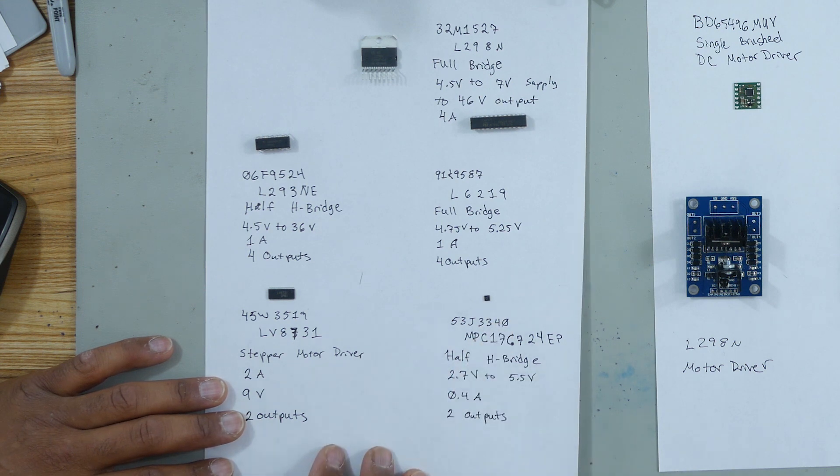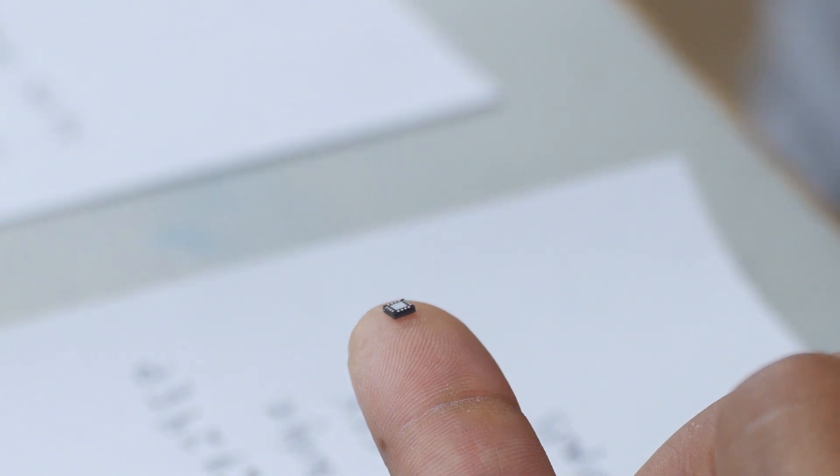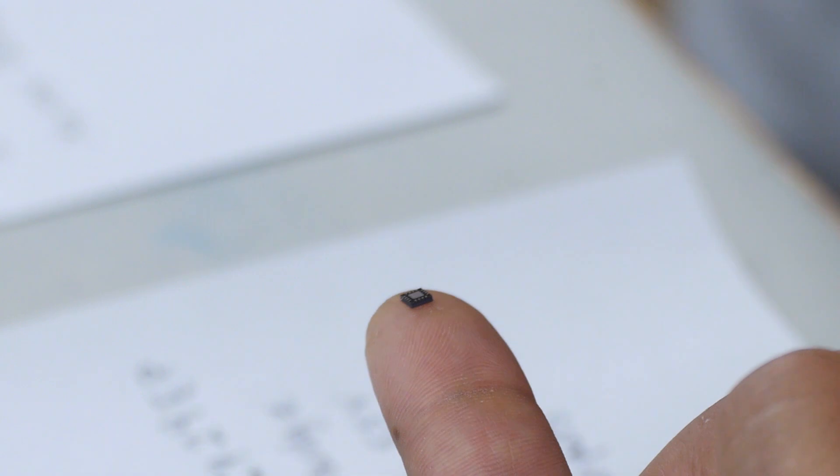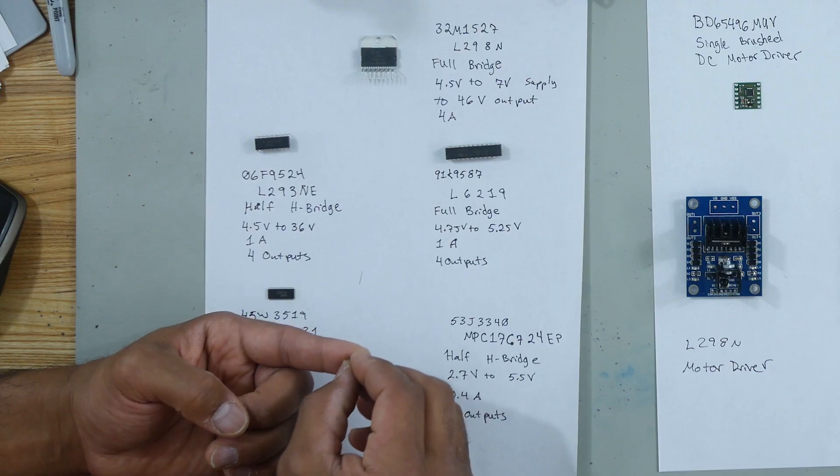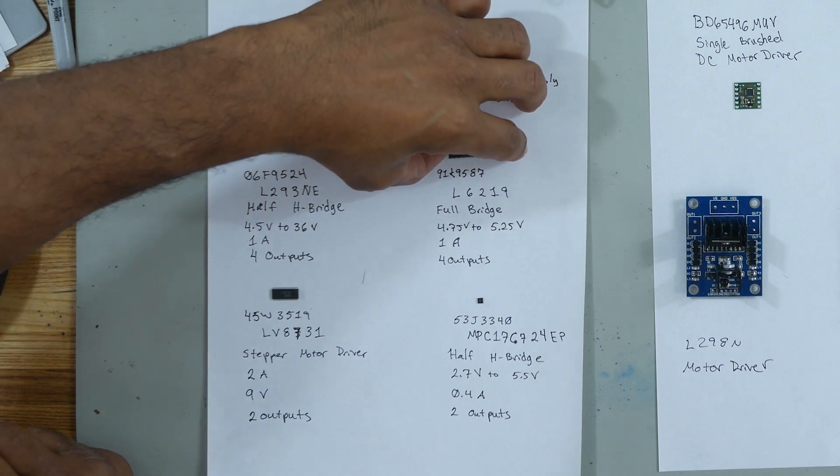Then there's the LV8731, it's a stepper motor driver. Then the MPC17C724EP. This is a really small motor driver. We're looking at using that in the hot glue gun. Is it possible to solder to that even? Well, normally when those are assembled they're done in a pick-and-place machine kind of thing, but we've actually managed to do it. You've done it before? Yeah, because that's smaller than the diameter of your solder thing. Well actually I have a few different tips for my soldering iron, some really tiny ones. But you know, just trial and error. And then we have the L6219, it's another H-bridge driver. It actually has a larger through-hole package.